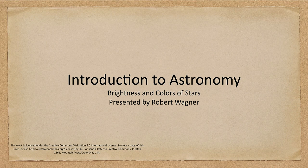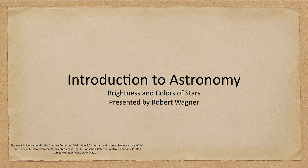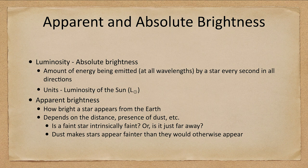Greetings and welcome to the introduction to astronomy. In this lecture we are going to talk about stars, and specifically look at their brightness and colors that we see for stars. When we talk about the brightness of a star, we have two different ways to look at this: we have the absolute brightness and the apparent brightness.